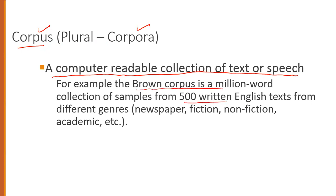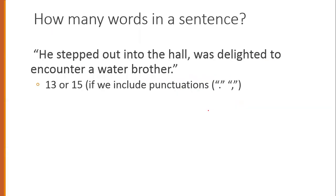The Brown Corpus contains 500 written English texts. It is different from general text in that it covers a variety of genres — newspapers, fiction, non-fiction, and so on.